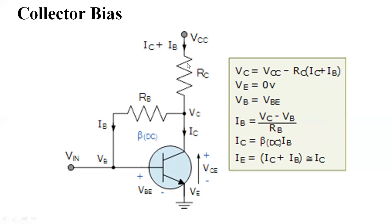Through resistance RC, the current IC plus IB is going to flow. If we calculate the collector voltage VC, it is: VCC minus the voltage across RC. The voltage across RC equals RC times (IC plus IB). After consuming that voltage from VCC, we get VC, and VC equals VCE. So VCE equals VCC minus RC·(IC plus IB).